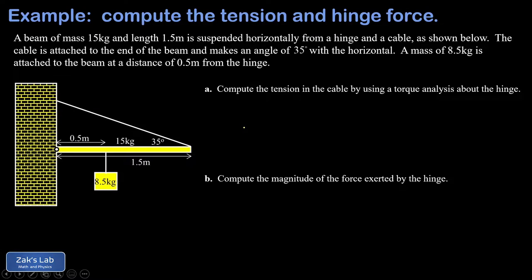In this video we're looking at a classic beam and cable problem. We have a heavy beam connected to a wall by a hinge at its left end, suspended horizontally by a cable at a 35 degree angle. The beam has a mass of 15 kilograms and there's an additional attached mass of 8.5 kilograms. We're looking for the tension in the cable and the force exerted by the hinge.